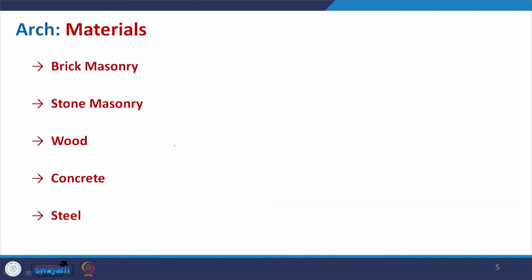Coming to the materials that can be used: any material can be used, but normally materials used historically or in recent times include brick masonry, stone masonry, and sometimes wood — though it is not easy to curve wood, so different seasoning methods or cutting into pieces (battens) are used to form the arch. Concrete arches are also possible with proper reinforcement, and steel arches can be prefabricated and easily made as per requirement.